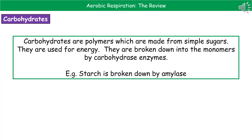The first type of food that you need to consume are carbohydrates. Carbohydrates are an example of a polymer, which is made from simple sugars, and we use carbohydrates for energy in the body. When we eat carbohydrates, they're going to be broken down into those simple sugar monomers by enzymes called carbohydrases. For example, in your mouth when you eat things like bread which contains starch, that starch is broken down by the enzyme amylase.